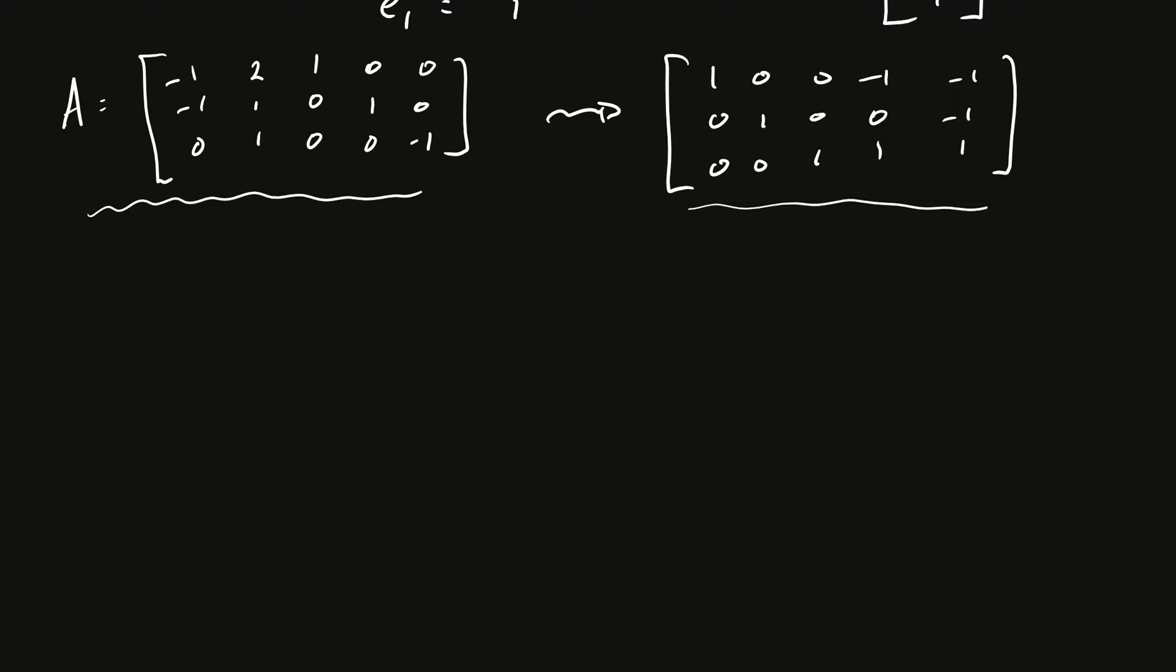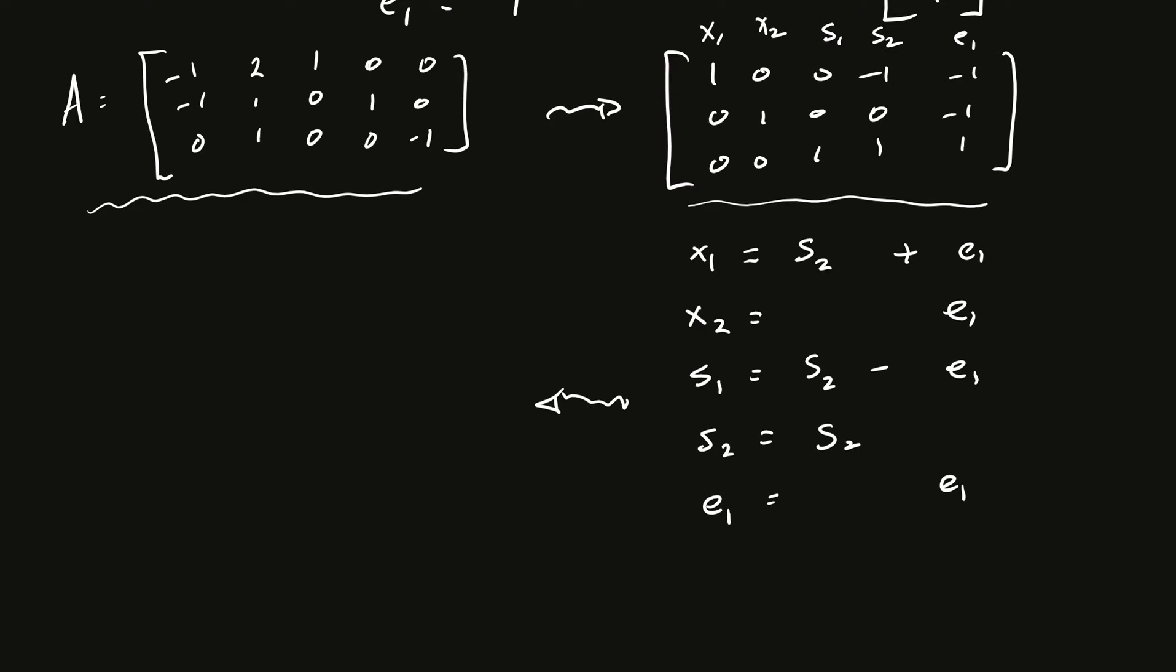And so, from this, we can write down a basis or we can get a basis for our null space. Remember x1 and x2 are the variables, S1, S2 and then E1. So, then from this, we see that x1 is equal to S2 plus E1. x2 is a basic variable. It's E1. S1 is basic. And so, it's going to be S2 minus E1. And then S2 is free or non-basic. And then E1 is free or non-basic. And so, this set right here is S2 times one vector plus E1 times another vector. So, that would be 1, 0, 1, 1, 0, and 1, 1, negative 1, 0, 1.